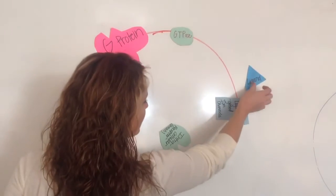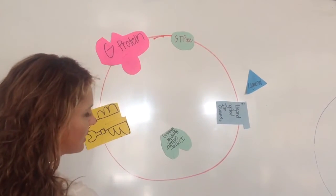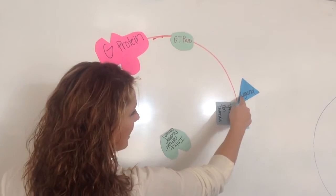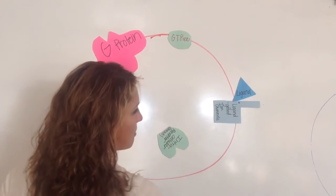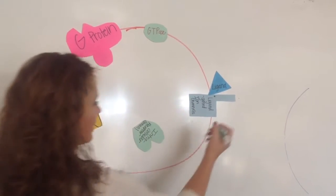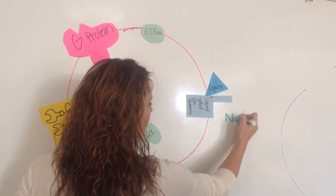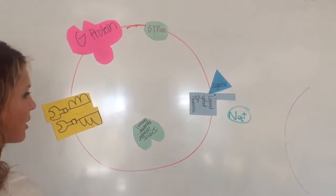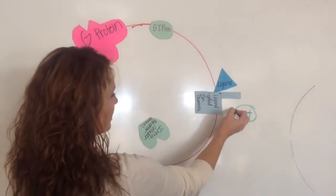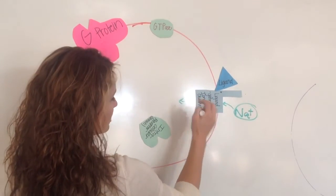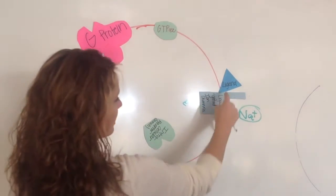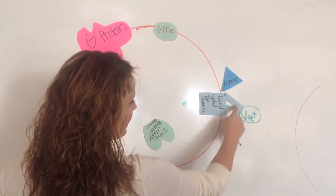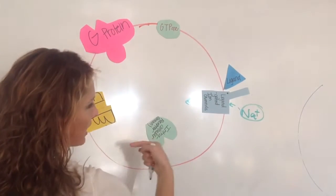The second one we'll talk about is the ligand-gated ion channel. So when the ligand binds, the gate opens up. And when the gate opens up, it allows ions. Ions are charged particles to come in through the channel. So the name of this one gives it away, ligand-gated ion, which is a charged particle, channel.